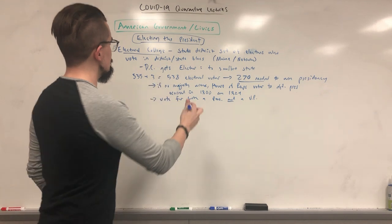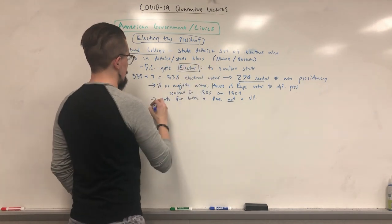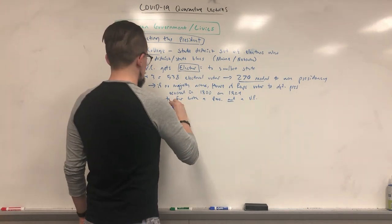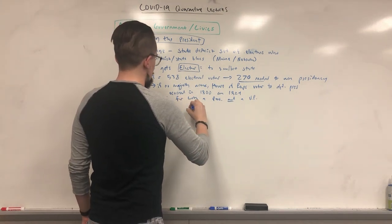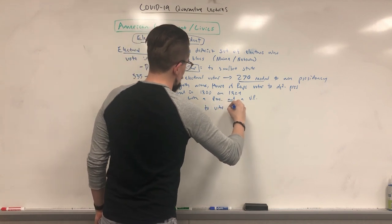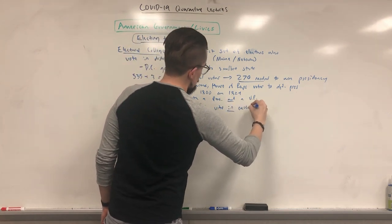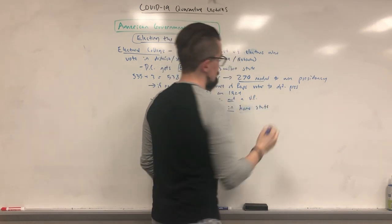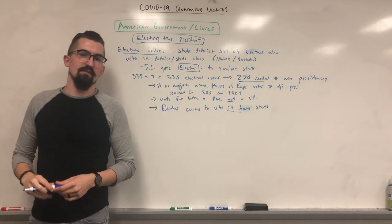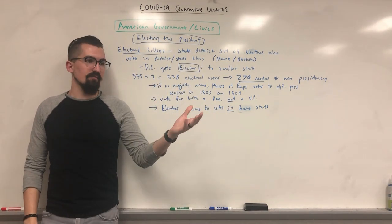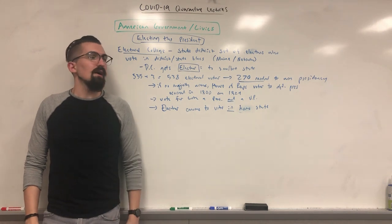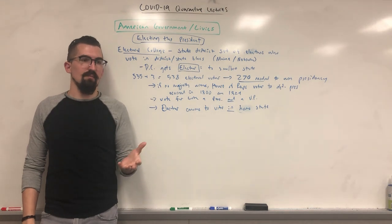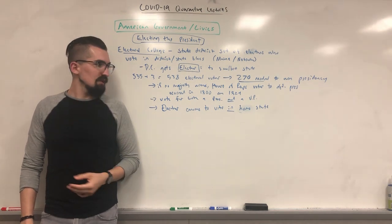These electors are not members of the federal government. Electors convene to vote in their home state. The reason for this is that back in the 18th century, it was a real burden to travel from distant states all the way to the capital — especially for people who weren't even part of the federal government, since electors are required not to be members of the federal government.